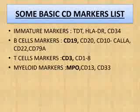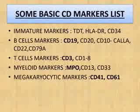MPO (myeloperoxidase), CD13, and CD33 are myeloid markers. CD41 and CD61 are megakaryocytic markers. The highlighted markers are like heroes of their particular lineage: CD34 is a stem cell marker, CD19 is a pan B cell marker, and CD3 is a pan T cell marker.